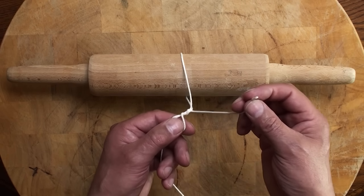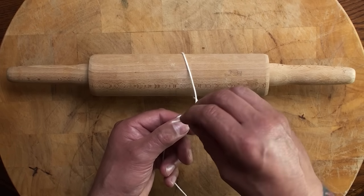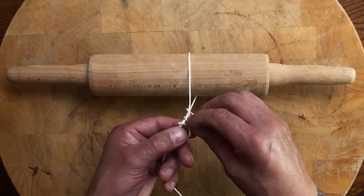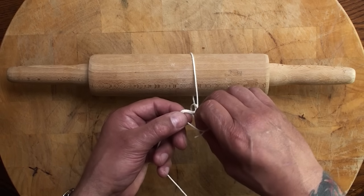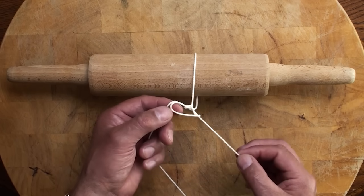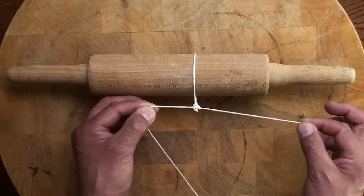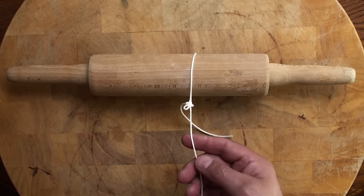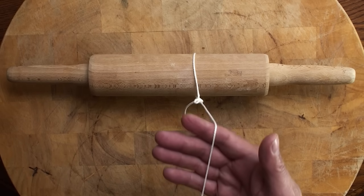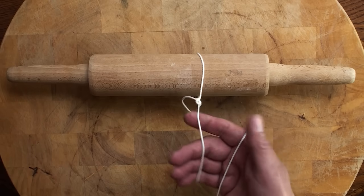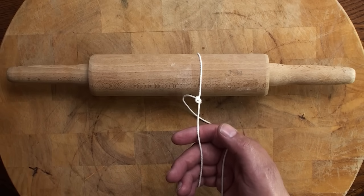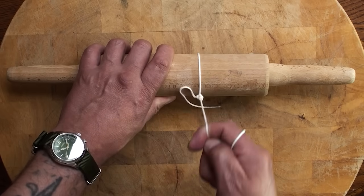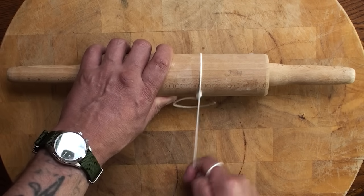With the cut end of string, place this down through the loop like so, then through, and pull that down. Pull together. It's a slip knot really.